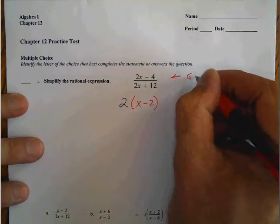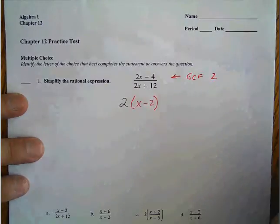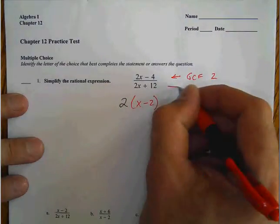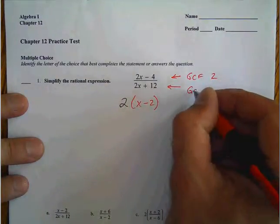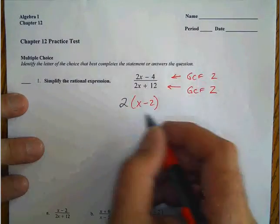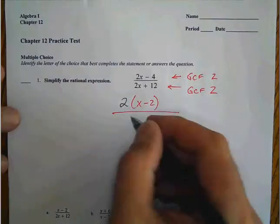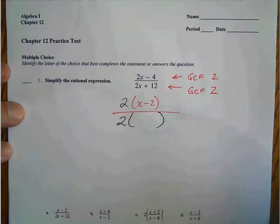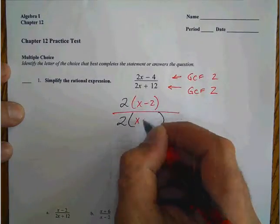So the GCF is 2. On the bottom, we're also going to look for a GCF there. The GCF of the bottom, 2x and 12, is also 2. So on the bottom, we're going to take out a 2, and that leaves us with x plus 6.